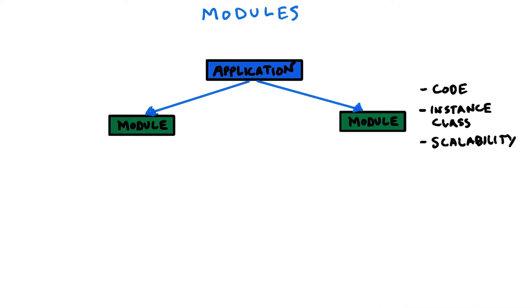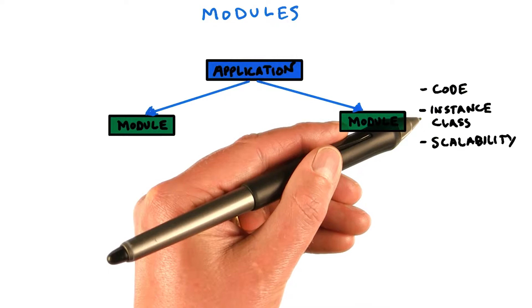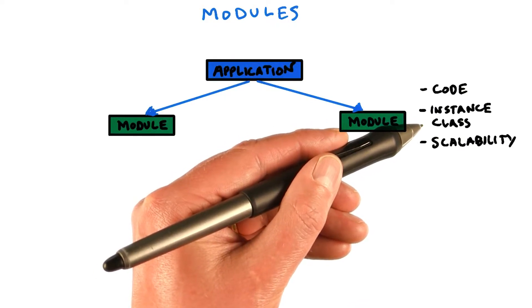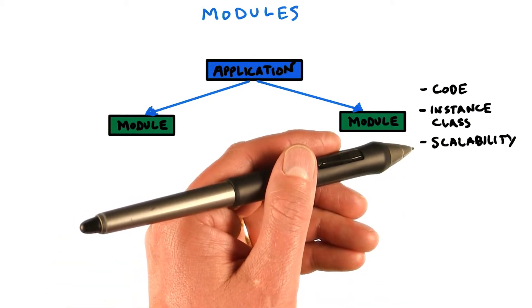A module groups three concepts. Code related to the module. The instance class that should be used to execute the code. This is the speed of the CPU and the amount of memory that should be used. The scalability parameters, including the number of instances to start and their lifecycle.